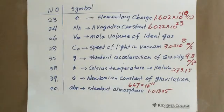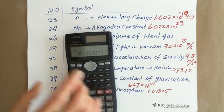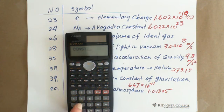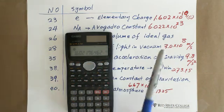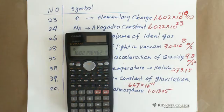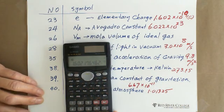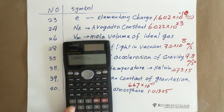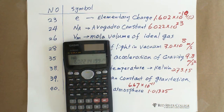Besides that, we also have the charge of electrons. You can hit the constant button and go to code number 23. It gives you 1.602 times 10 to the negative 19 exponent — this is used in physics. And also in chemistry, we need the Avogadro number, the Avogadro constant. You can hit the constant button and go to code number 24. It shows you the Avogadro constant, which is 6.022 times 10 to the 23 exponent.